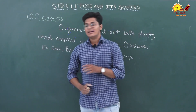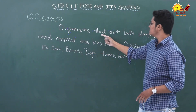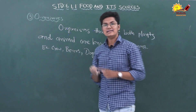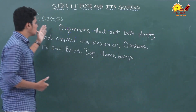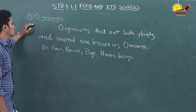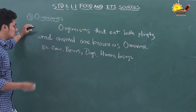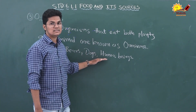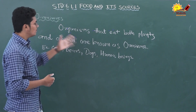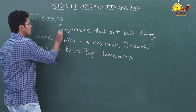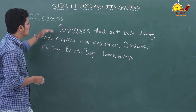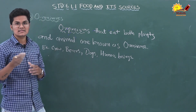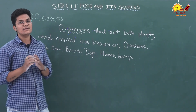The next category is omnivorous. Organisms that eat both plants and animals are known as omnivorous. Examples are crows, bears, dogs, and human beings. Yes, human beings eat both nicely cooked plants and meat, so we are omnivorous. What does organism mean? Organisms means any individual — like animals, plants, single-cell life forms — all are known as organisms. All living things are known as organisms.